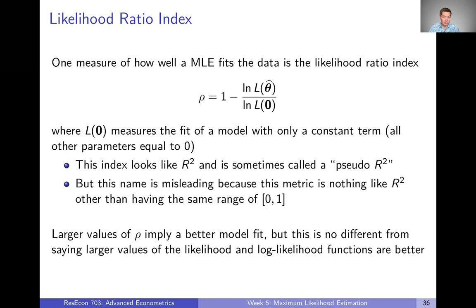The likelihood ratio index does not tell you anything about what proportion of variation is explained. All it really tells you is that larger values of rho indicate a better model fit — but that's no different from just saying that larger values of the likelihood or log likelihood function are better. In some sense, the likelihood ratio index can give false precision or a falsely deeper understanding, when really all it's telling you is that higher values are better. You might see it, but we're not going to use it in this class, and I'd caution you against over-interpreting it.